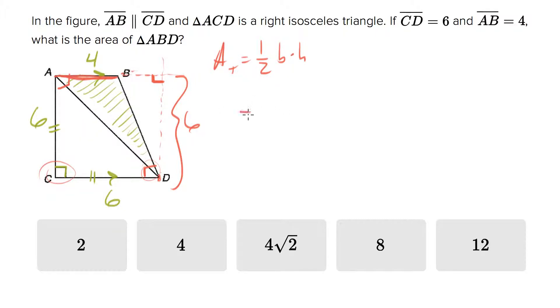And so we can just plug in to the area of the triangle is 1 half base of 4, height of 6, which equals 12.